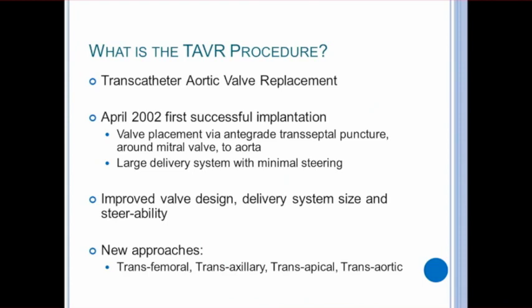Many patients who have aortic stenosis will also have calcification in their arteries. This can increase the risk of vascular complications and limit catheter access, so these patients may require a different approach. Luckily, there are several other access points used today, including transaxillary, where the catheters enter through the patient's axillary artery, through the cephalic artery, into the carotid, and finally the aortic arch to reach the aortic valve.